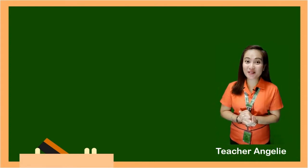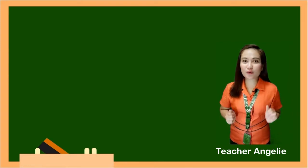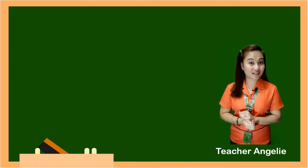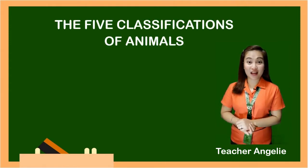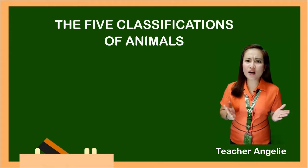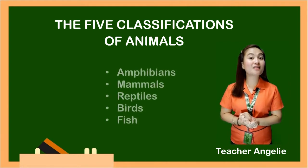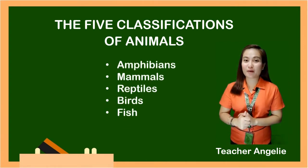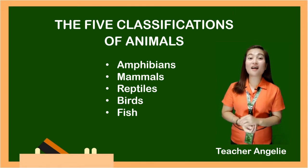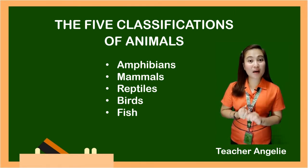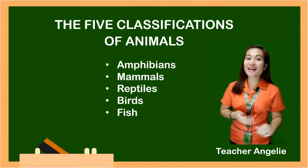Class, did you still remember our lesson yesterday? What was our lesson yesterday? Yes, correct! It's the five classifications of animals. What are these five classifications? The five classifications of animals are amphibians, mammals, reptiles, birds, and fish.